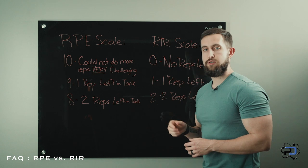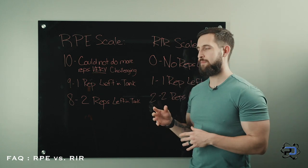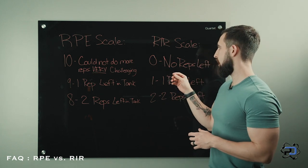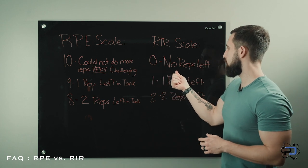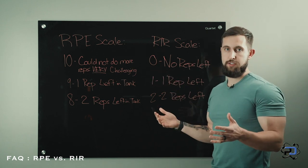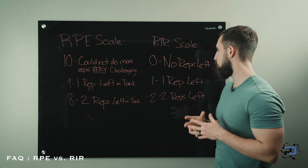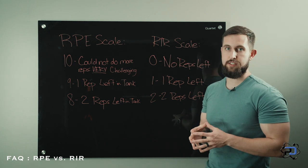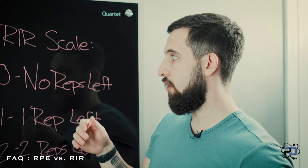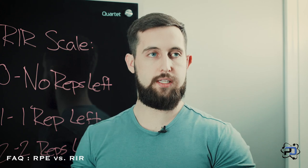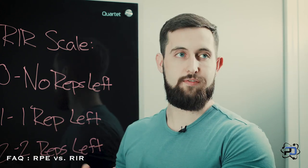RIR is going to be the exact same thing, just presented differently. With RIR, a rating of 0 means no repetitions left in the tank, a rating of 1 means one repetition left in the tank, and so on. So they are both essentially a 0 to 10 scale, just set in a different way.